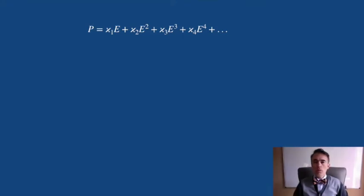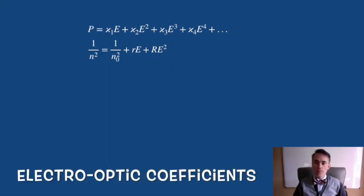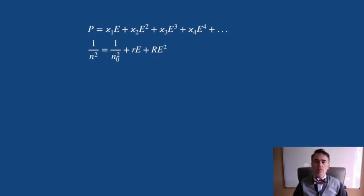We can also write this in terms of the index of refraction. R and capital R are the linear and quadratic electro-optic coefficients, and n0 is the refractive index in the absence of the electric field.